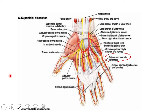The superficial palmar arch is seen resting on the long flexor tendons of the palm. Other than the long flexor tendons, we can also identify the lumbricals and the palmar branches of the median nerve. All these are the structures which make up the bed on which the superficial palmar arch rests. We can also appreciate the flexor retinaculum here.